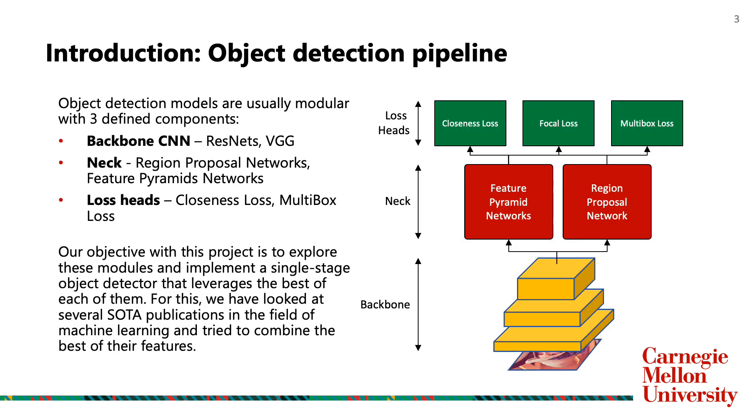The detection pipeline makes use of at least three major modules: the backbone, the neck, and loss heads. In this project we aim to combine the best of these modules to implement a single-stage anchor-free model that is able to make detections with accuracy at par with anchor-based implementations. We go in depth with every module in the presentation. Now I'll hand it over to Baishawi.